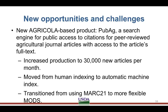With moving to a digital library, one of our challenges was a new project called PubAg, which is a search engine for public access to citations for peer-reviewed agricultural journal articles with full access to the article's full text. This called for a major change in the way we produced Agricola article citations. We had to increase our production up to 30,000 articles per month with less staff. We also brought in a new system to do automatic indexing of articles — no more humans reading articles and adding subject terms. We also needed to transition from MARC 21 to a more flexible metadata format, MODS, which is also more machine-friendly.